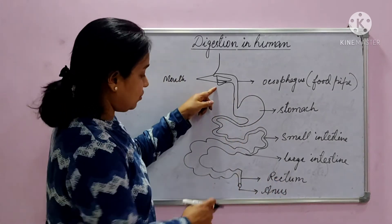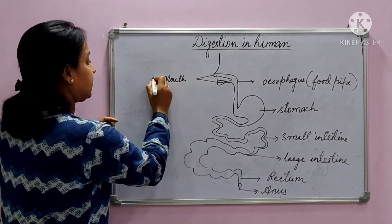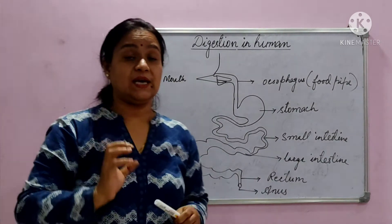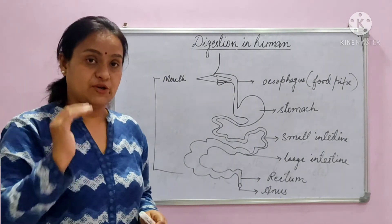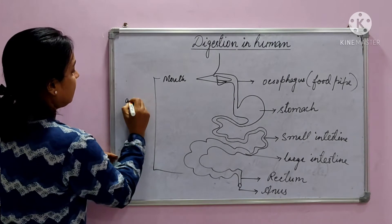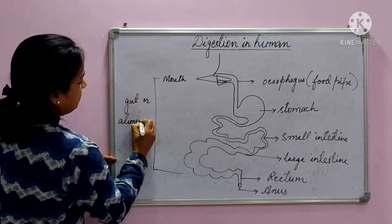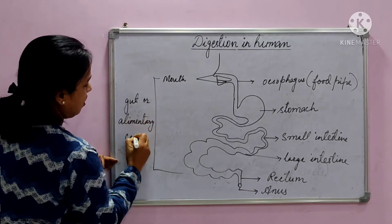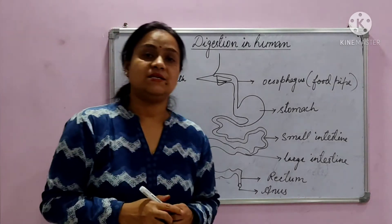So from the mouth till the anus this is a single tube, and this single tube is called the gut or the alimentary canal. It contains all the organs that participate in digestion.